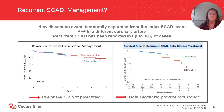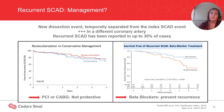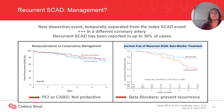Recurrent SCAD is defined as a new dissection event temporarily separated from the index SCAD event, usually in a different coronary artery, and is different from SCAD extension. It has been reported in up to 30% of cases. Since recurrence tends to occur in different vessels from the initial dissection, revascularization has not been shown in long-term follow-up to prevent recurrent myocardial infarction due to SCAD. Given the potential benefit of beta-blockers in preventing recurrence, preferential prescription of beta-blockers should be considered, for example for treatment of hypertension in patients with SCAD.